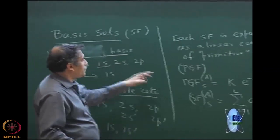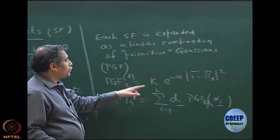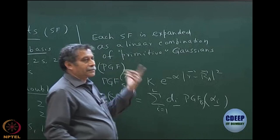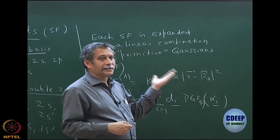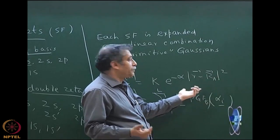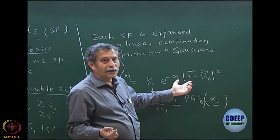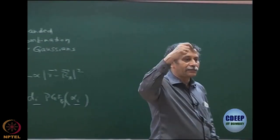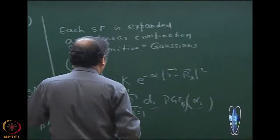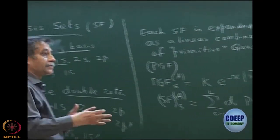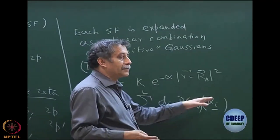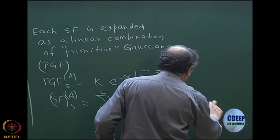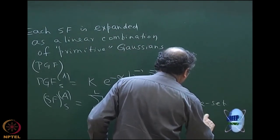A Slater function cannot be written as one primitive Gaussian; it has to be a linear combination of primitive Gaussians. The two important differences we highlighted: at r = 0, the Gaussian's derivative is 0, whereas for the Slater it is non-zero. At r → ∞, the Gaussian decays much more rapidly than the Slater because of the r² in the exponent. Because of these differences and differences in the intermediate region, a Slater cannot be mapped to one primitive — it has to be a combination, and this combination is preset from an earlier atomic calculation.